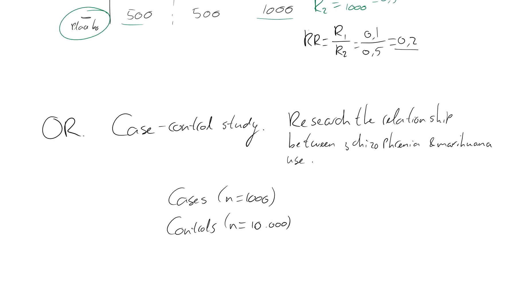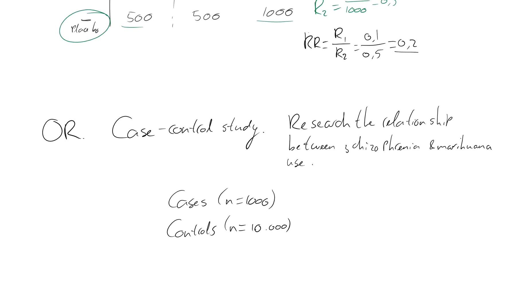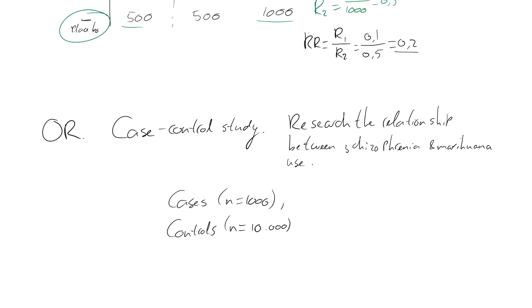Of the cases, let's say 500 smoked marijuana, so that's a plus, and 500 did not. And of the controls, let's say 1,000 smoked marijuana and 9,000 did not.